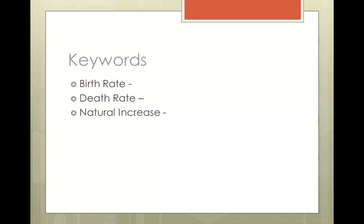Our first part is we need to understand keywords. You can be tested on these in the examination, and it's important that you're aware of what the different keywords mean. Just quickly going over these: first off, we've got birth rate. Birth rate is measured in the number of babies born per 1,000 people in a country. For a country like the UK, this is generally around 10.